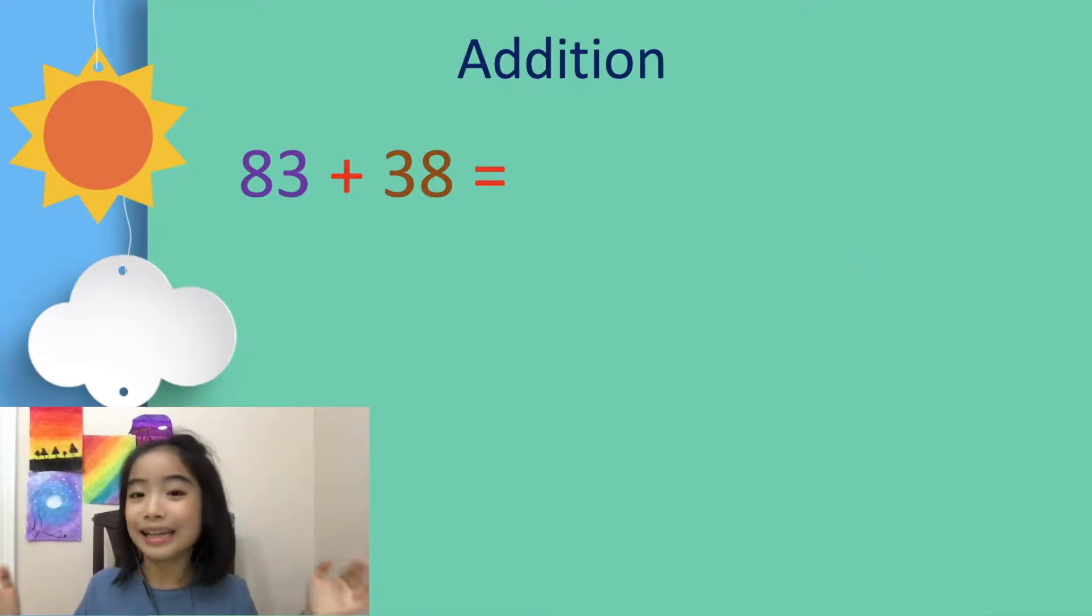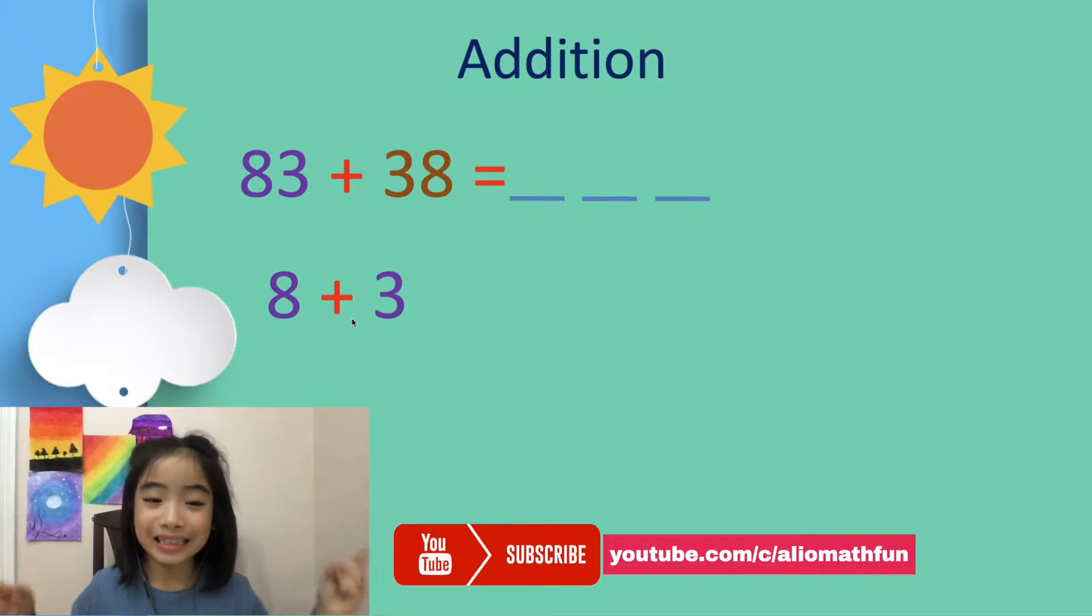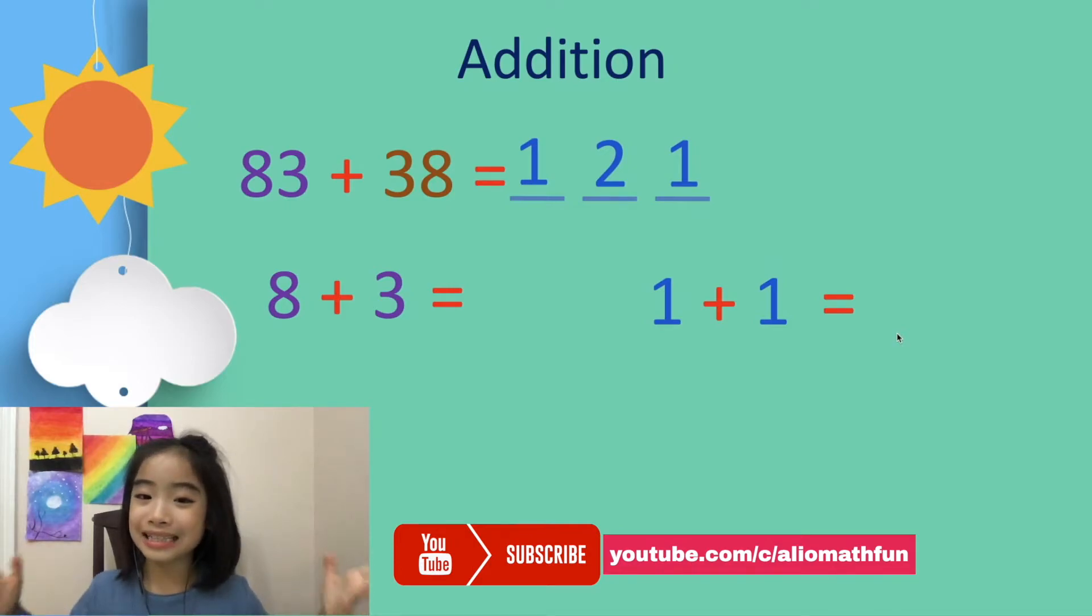First, let's learn the addition trick. Here, I have 83 plus 38. So, what's the answer? First, let's add the 10th position. 8 plus 3 equals 11. We put the 1 in the 100th position and the other 1 in the 1's position. Now, 1 plus 1 equals 2. We put the 2 in the 10th position. Here is our answer, 121. That was easy.